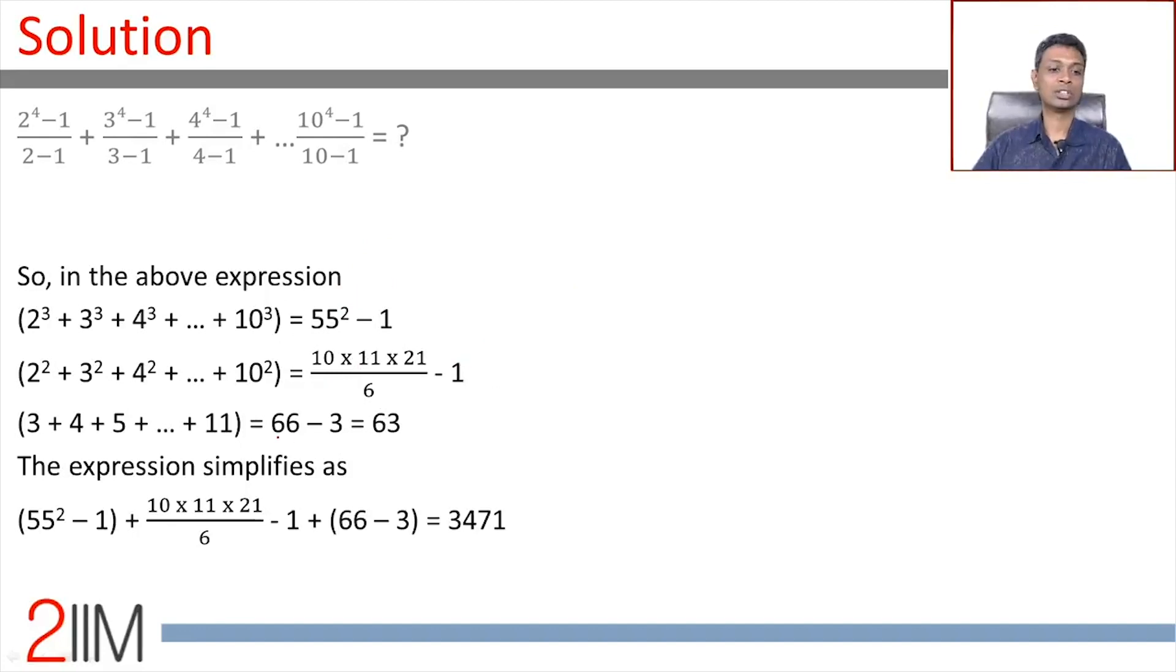It's very simple. This is 55^2 - 1. n(n+1)(2n+1)/6 - 1. This is 11×12/2 - 3, the 1 + 2 that we are subtracting. So add this, this and this.